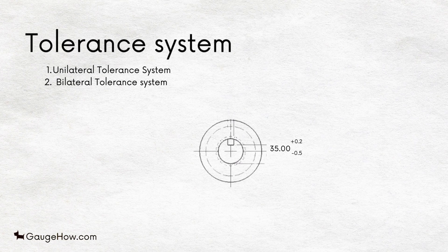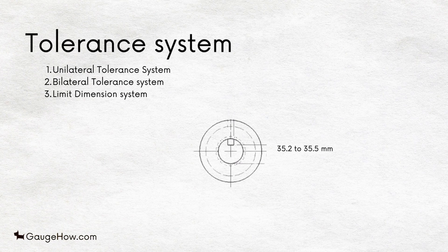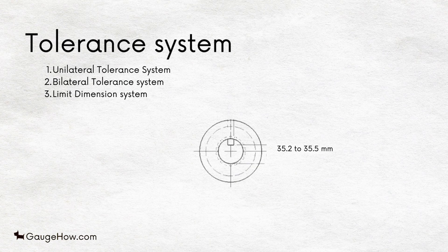Bilateral Tolerance System: For example, 35.00 +0.2 -0.5. Limit Dimension System: In this system, the size and deviation of the part are specified by only maximum and minimum dimensions.